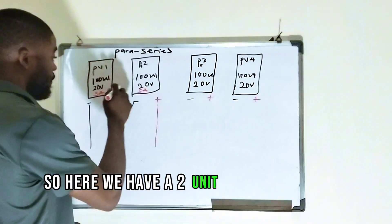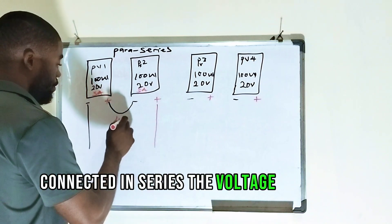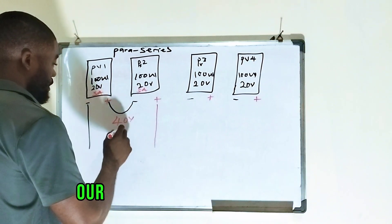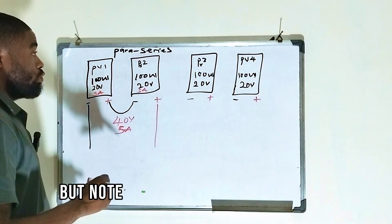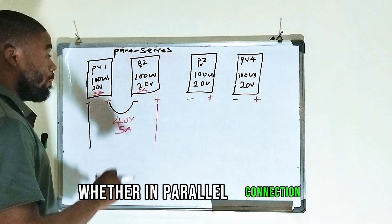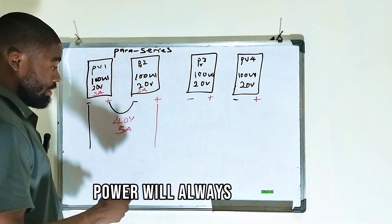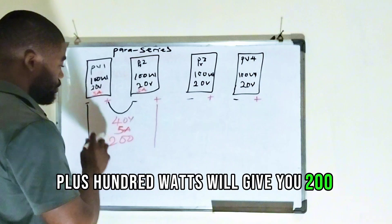So here we have two units of 20-watt solar panels connected in Series. The voltage will be 40-volt. Our current still remains 5-amps. But note that whether in Paraseries, whether in Series connection, whether in parallel connection, power will always increase.